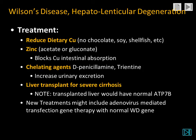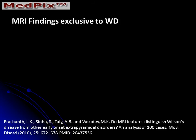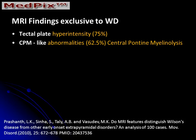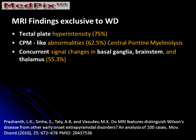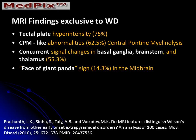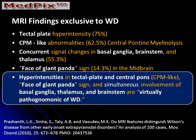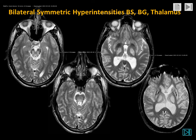New treatments might also involve gene therapy to replace the defective gene within the hepatocytes. The MR findings that are exclusive to Wilson's disease include the tectal plate hyperintensity, the CPM-like abnormalities in the central pons, and concurrent signal changes in the basal ganglia, brainstem, and thalamus. The face of the giant panda sign is only seen in about one out of seven patients with Wilson's disease. The hyperintensities in the tectal plate and pons, and the simultaneous involvement of the basal ganglia, thalamus, and brainstem, have been described as virtually pathognomonic of Wilson's disease. These features were seen in this index case.